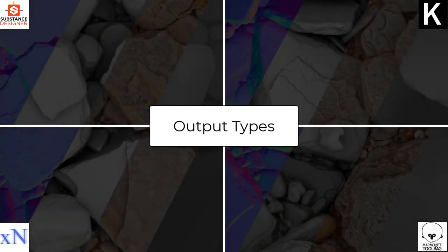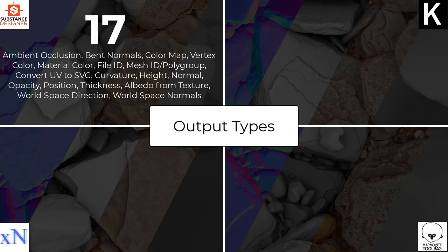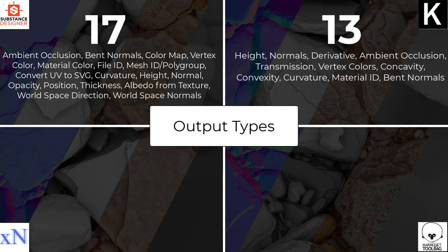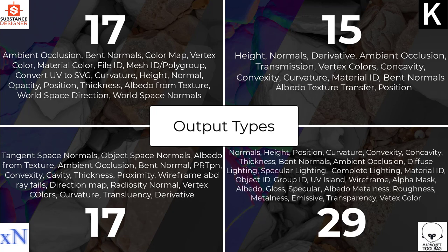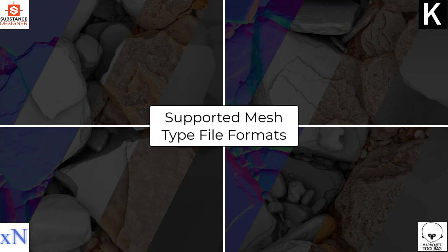The next factor is output map types — the types of PBR textures the baker can render. Each software delivers a full range of PBR options: Substance Designer offers 17 basic output types, Knalt offers 13 key output types (with more coming in an update), XNormal offers 17, and Marmoset Toolbag 3 offers 29. Toolbag wins here since it's always better to have more options than find something missing when you need it.